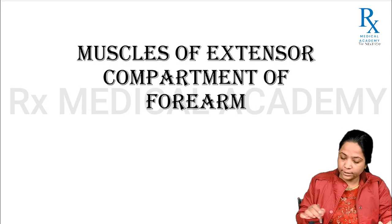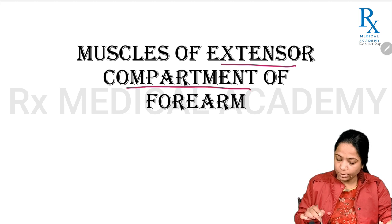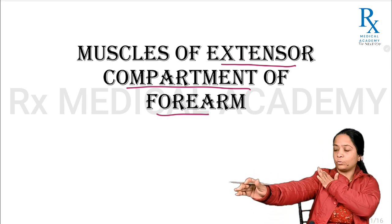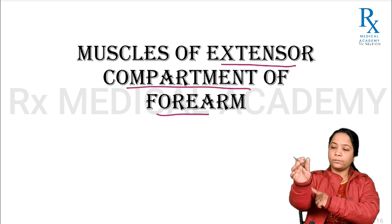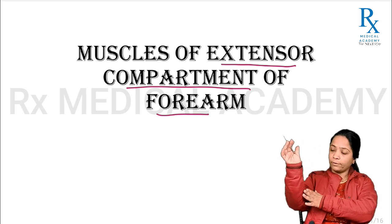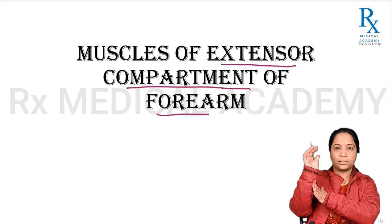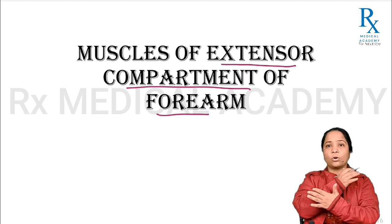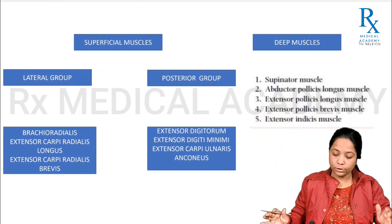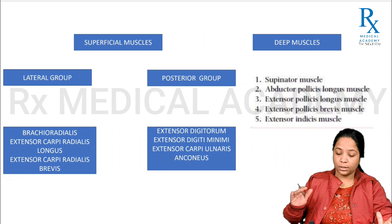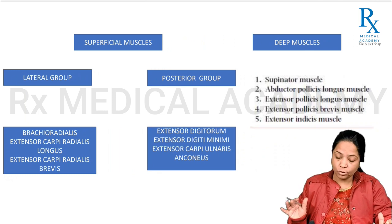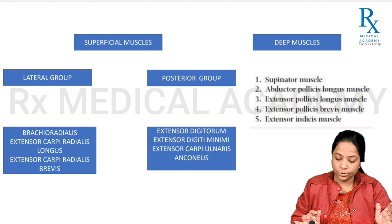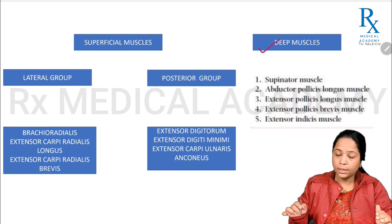Today's topic is the muscles of the extensor compartment of the forearm. In the upper limb, the arm is between the shoulder joint and elbow joint, and the forearm is between the elbow and wrist joint. We have already covered the muscles of the anterior or flexor compartment; now we will see the muscles of the posterior or extensor compartment of the forearm. These muscles are arranged in two layers: superficial and deep.